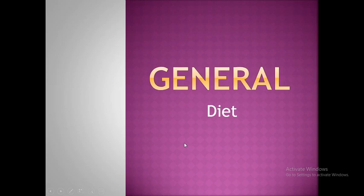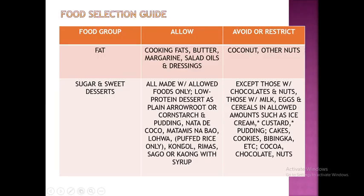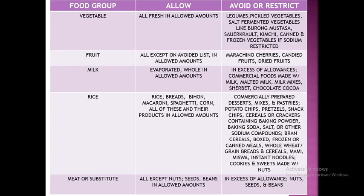For the general renal diet, a food selection guide covers all food groups including fat, sugar, and sweets. For example, in the fat category, cooking fat, butter, margarine, salad oils, and dressings are allowed, but coconuts and other nuts should be avoided. The guide also covers vegetables, fruit, milk, rice, and meat or other substitutes.